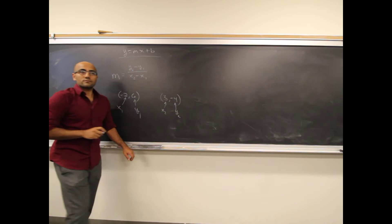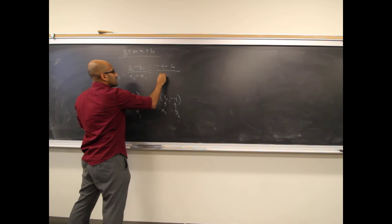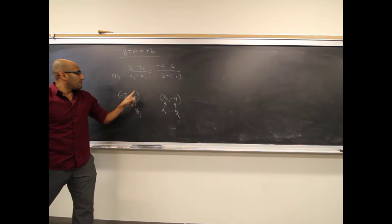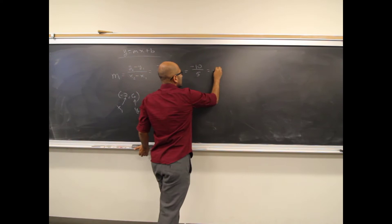Plugging in: m equals (negative 4 minus 6) divided by (3 minus negative 2). That's negative 10 divided by positive 5, which equals negative 2. The slope is negative 2.